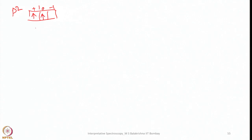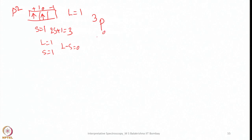Let us also look at the p2 system. For p2: S = 1, so 2S+1 = 3; L = 1, so the term is P, giving ³P. Since p2 is less than half-filled, J = L−S = 1−1 = 0, so the ground state term symbol is ³P₀. This is how you arrive at ground state term symbols.